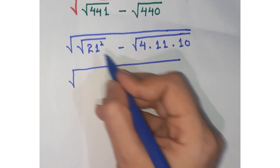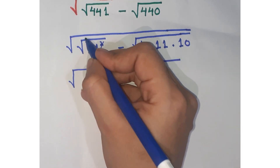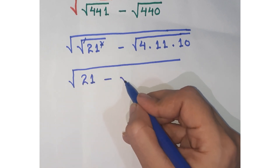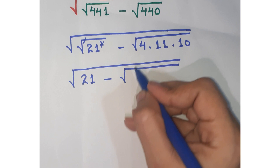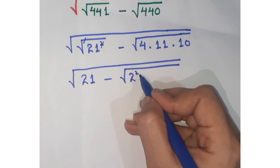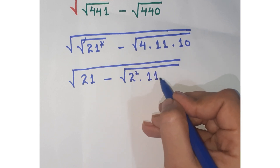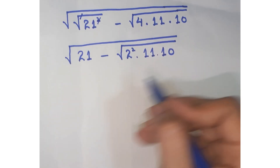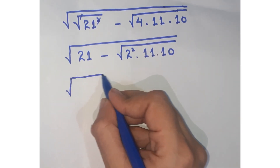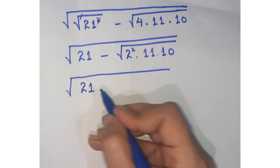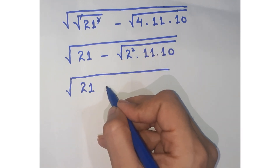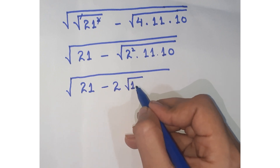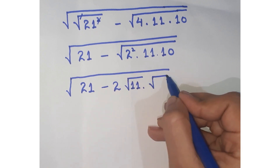Next, you can cancel out the square and the square root, so you are left with 21 minus the square root of (4 · 11 · 10). This 4 can be written as 2 squared, so the expression becomes 21 minus 2 times under root 11 times under root 10.